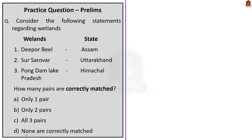The third question asks which wetlands are correctly matched with their states. Deepur Beel is in Assam (correct), Suraha Tal is a Ramsar site in Uttar Pradesh and not Uttarakhand (incorrect), and Pong Dam Lake is in Himachal Pradesh (correct). Therefore only two pairs are correctly matched, making Option B the correct answer.